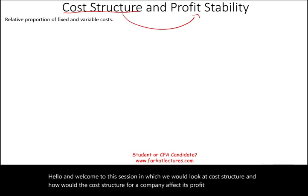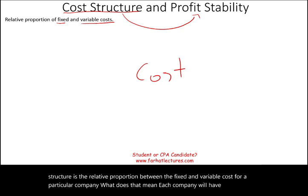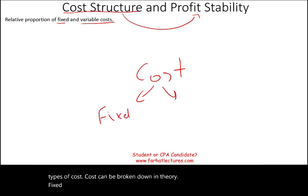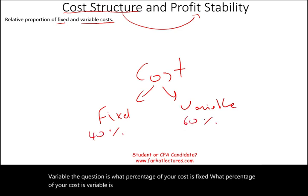Cost structure is the relative proportion between fixed and variable cost for a particular company. Each company will have various types of cost, and cost can be broken down into fixed and variable. The question is: what percentage of your cost is fixed and what percentage is variable? Is it 40% fixed, 60% variable? Or 60% fixed, 40% variable? This is what we mean by cost structure.